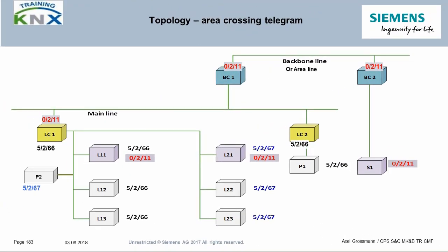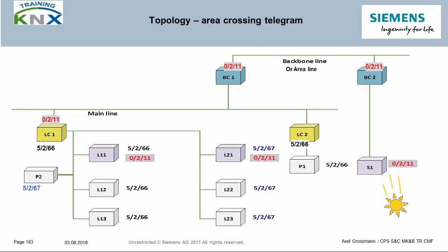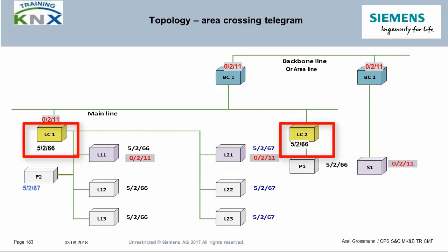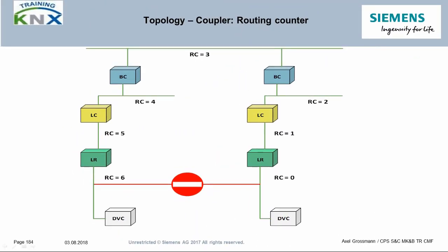If it is a larger building in which several areas exist, the light sensor can now be installed further away. The group address 0211 must now be entered in three couplers: the two area couplers 1.0.0 and 2.0.0, as well as the line coupler 1.1.0. In this picture, the P1 key has also been swapped out, meaning that the group address 5266 must also be entered in the filter tables of couplers located on the connection route from P1 to L11, L12, L13 — namely 1.1.0 and 1.2.0.